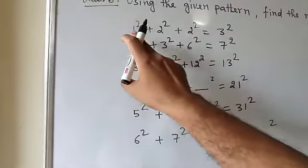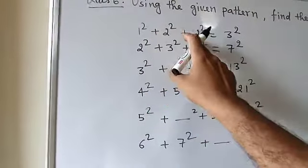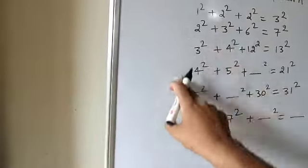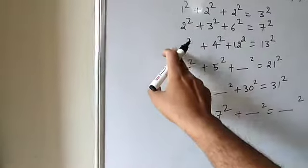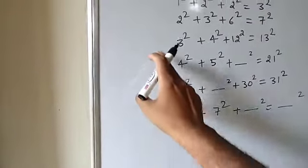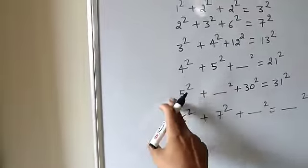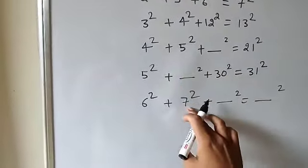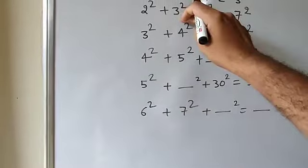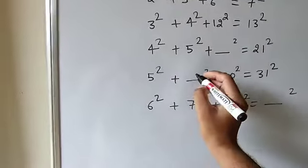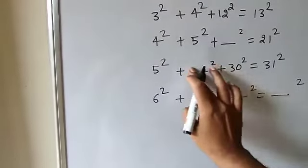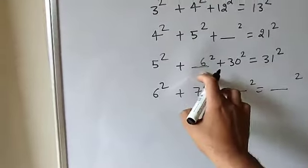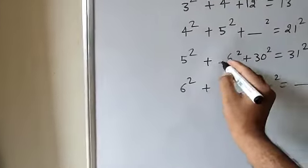Now if you follow the pattern going from top to bottom: the first column follows 1, 2, 3, 4, 5, 6 and the second column follows 2, 3, 4, 5, and the missing number is 6. So one missing number is found: it is 6, and then it is 7.